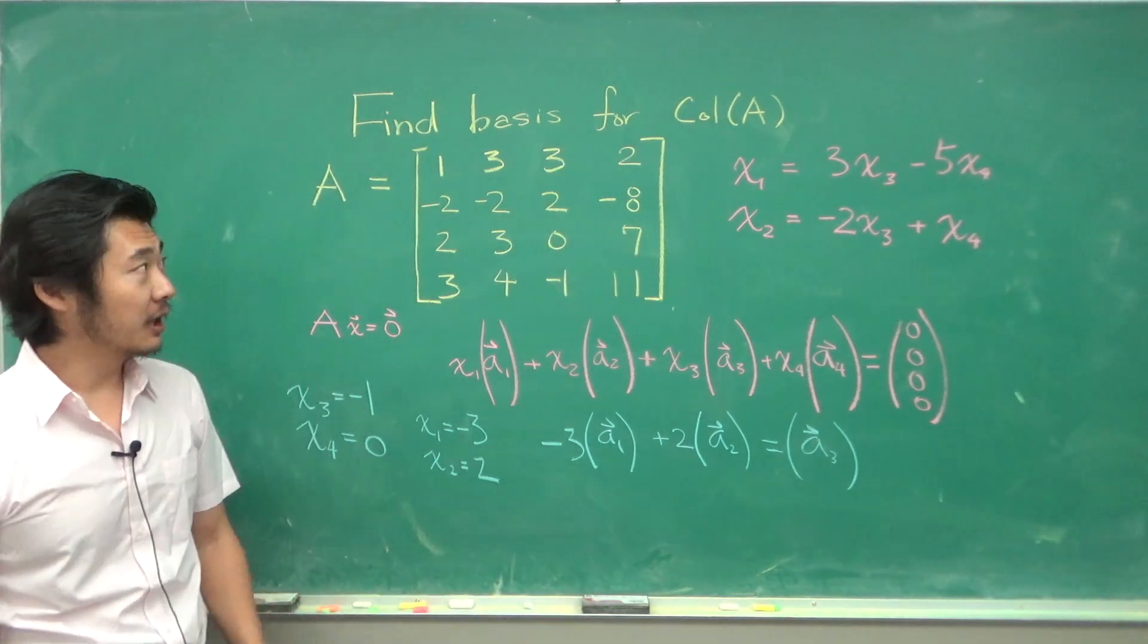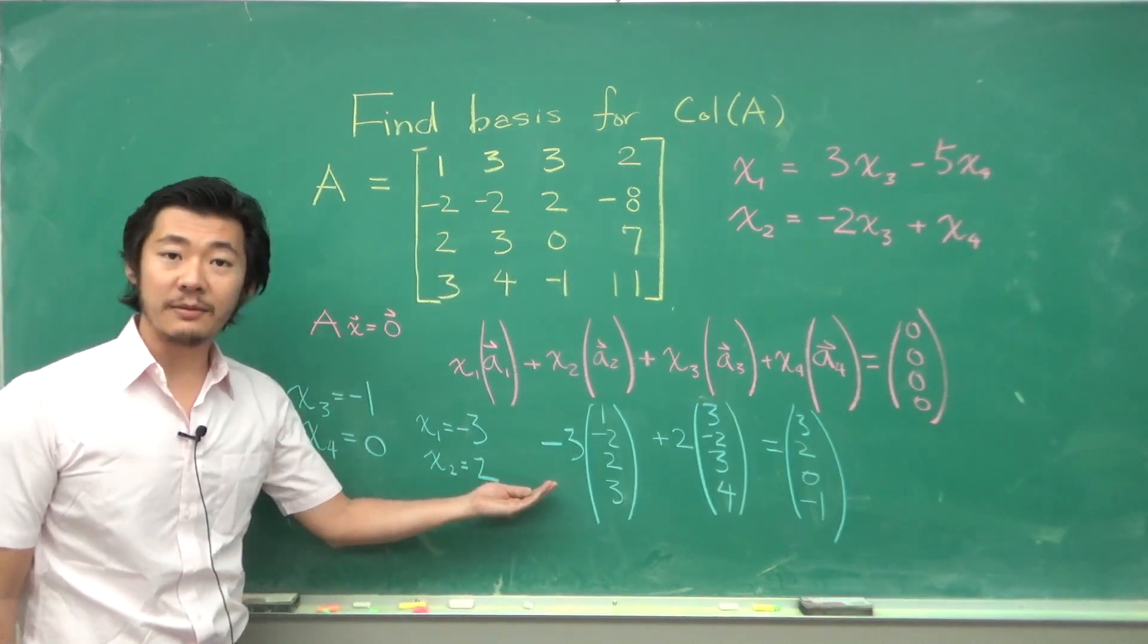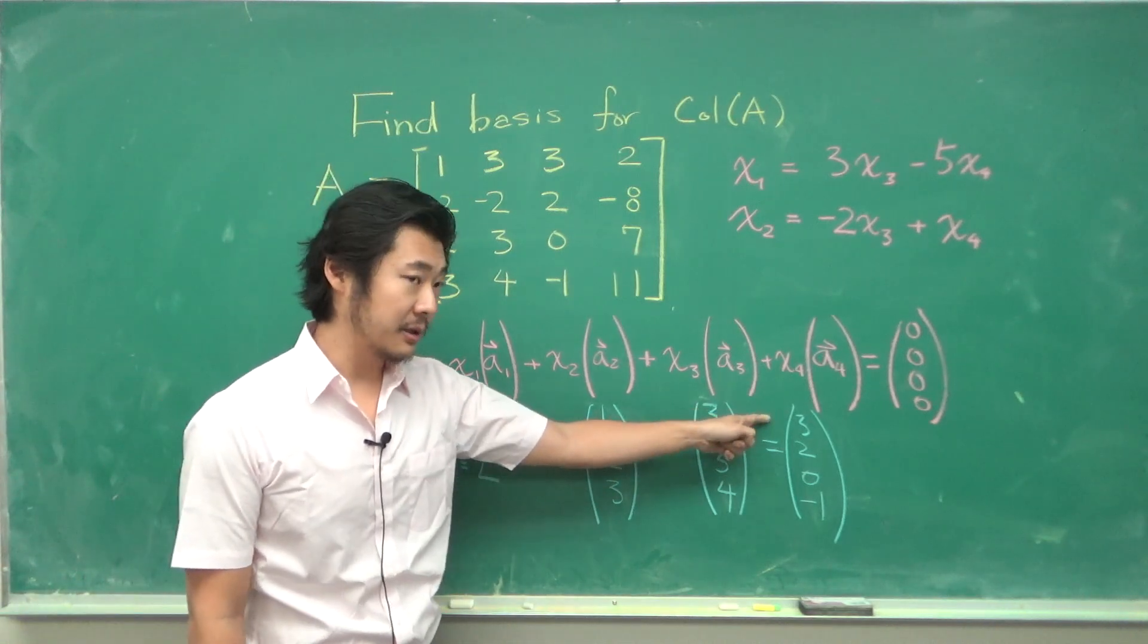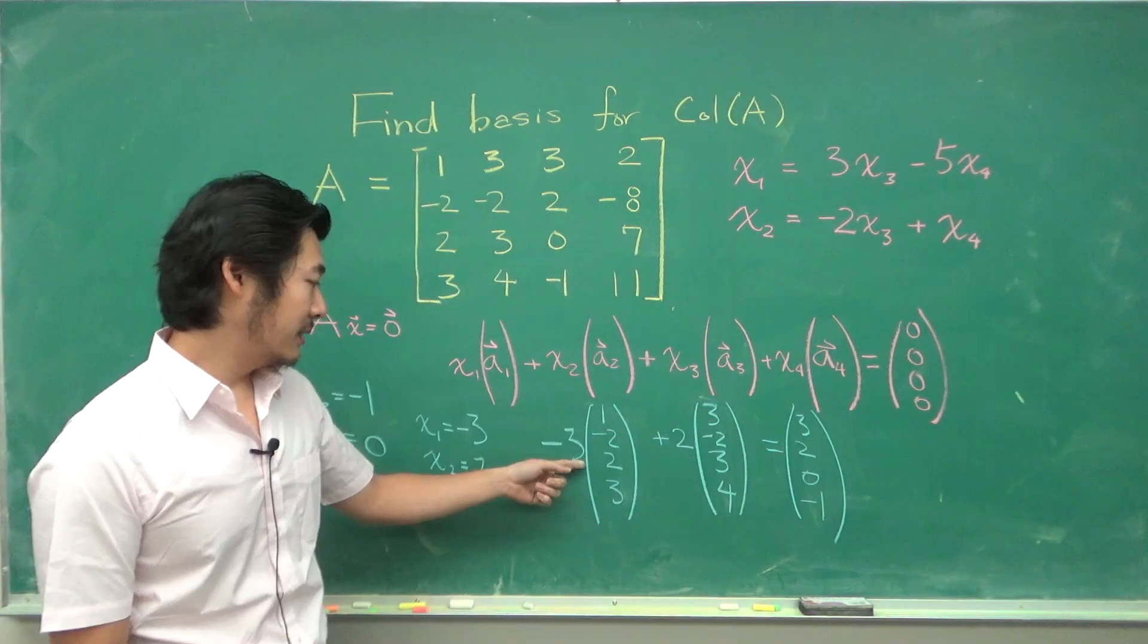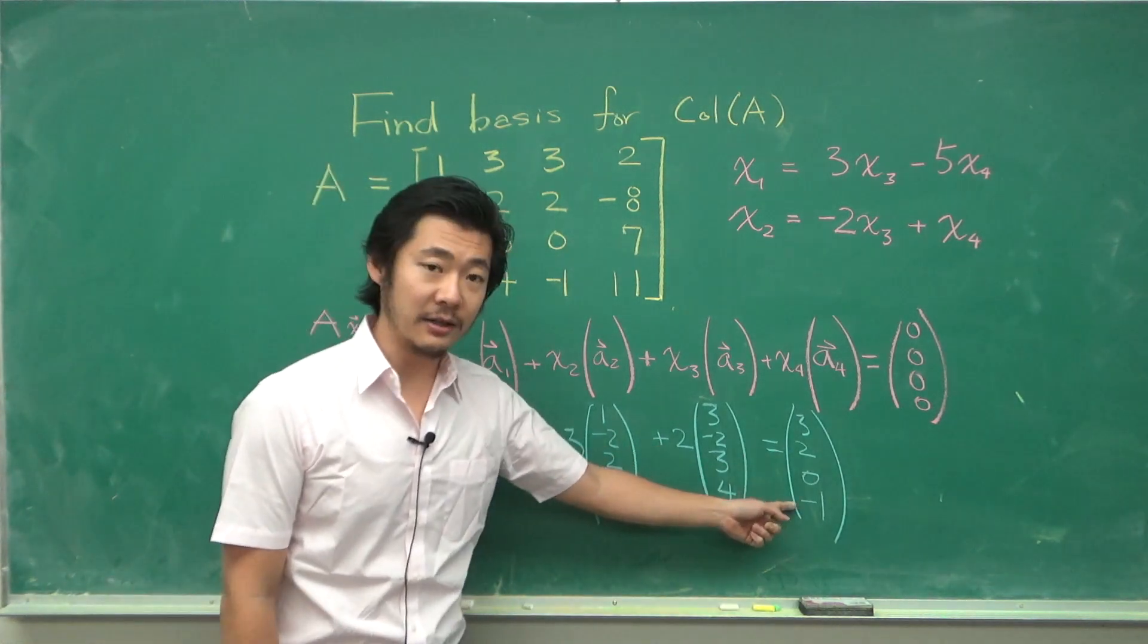If we plug in our actual vectors to confirm this dependence, let's quickly check: negative 3 plus 6 is 3, 6 plus minus 4 is 2, negative 6 plus 6 is 0, and negative 9 plus 8 is negative 1.